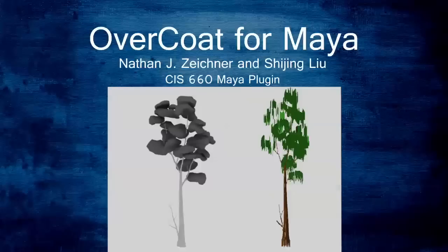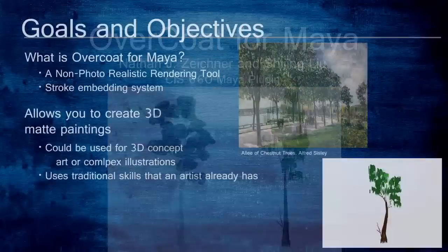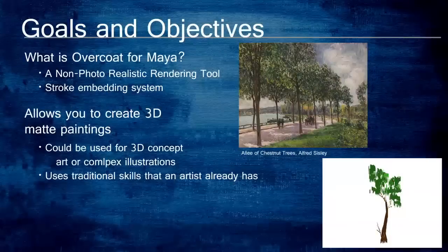Today I am going to be talking about Overcoat for Maya, a project by Nathan Zeichner and Shijin Liu for CIS 660. Overcoat for Maya is a non-photorealistic rendering system that attempts to capture a map painting-like style. Unlike other NPR methods, Overcoat approaches this problem by embedding strokes into a 3D scene. This allows an artist to create 3D map paintings which can be used for 3D concept art or complex illustrations for conventional or digital books. The major benefit to this system is that it utilizes the traditional skills an artist has.